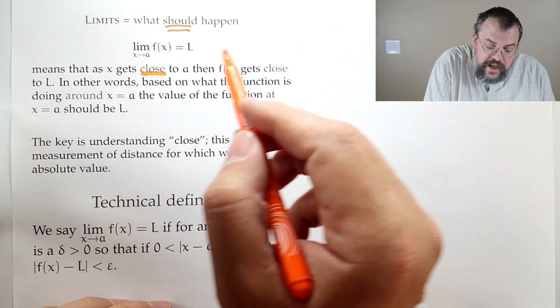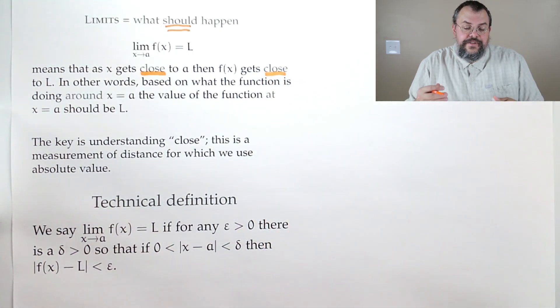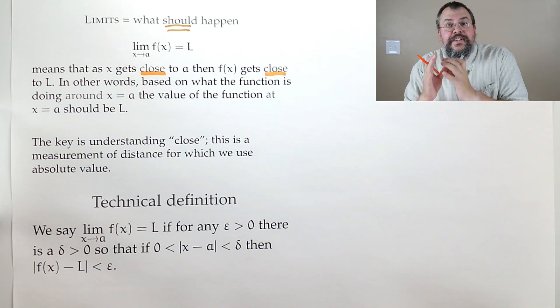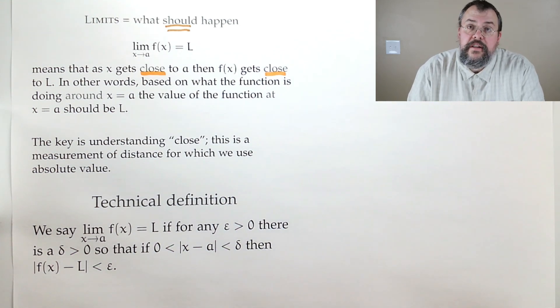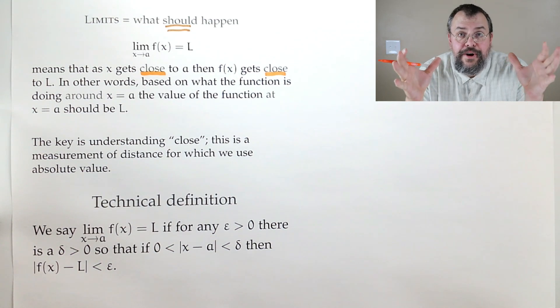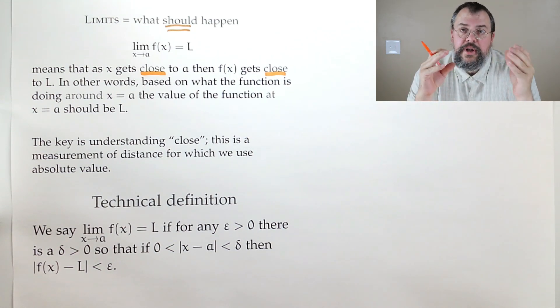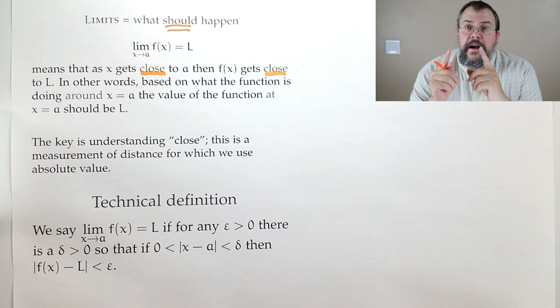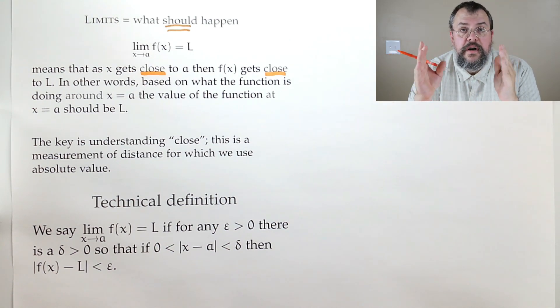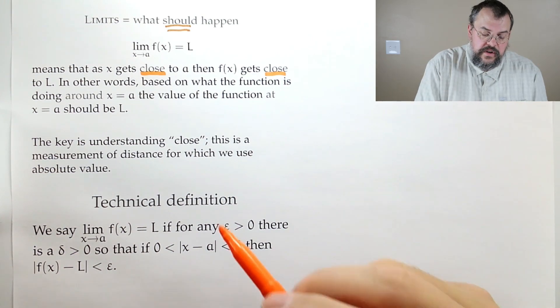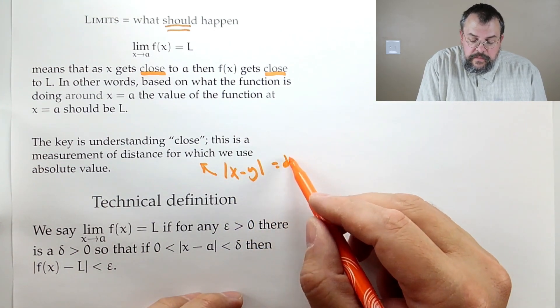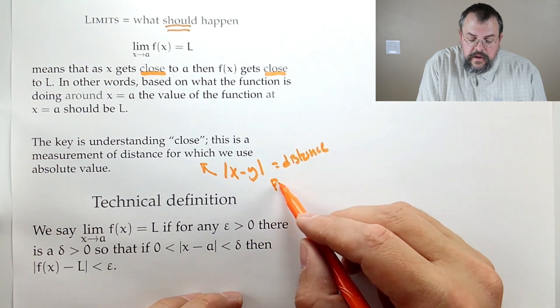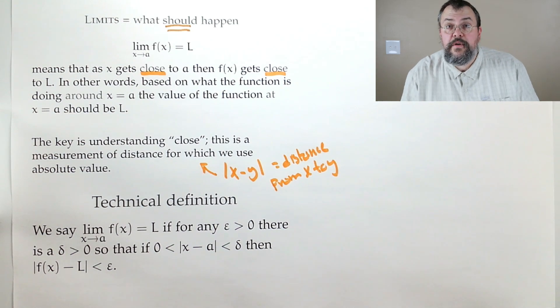Well, the key words here are close. And in fact, there's two notions of closeness. So we have two things getting close. x is getting close to a, f(x) is getting close to L. So we have these two things going on simultaneously. Now, how do you measure close? That's a good question. So when we talk about close between numbers, we talk about the distance between numbers.